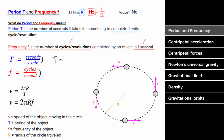In other words, the period is just one over the frequency, and the frequency is equal to one over the period. One example of a repeating process is an object going in a circle at a constant speed. If this is the case, you can relate the speed, the radius of the circle, and the period of the motion.